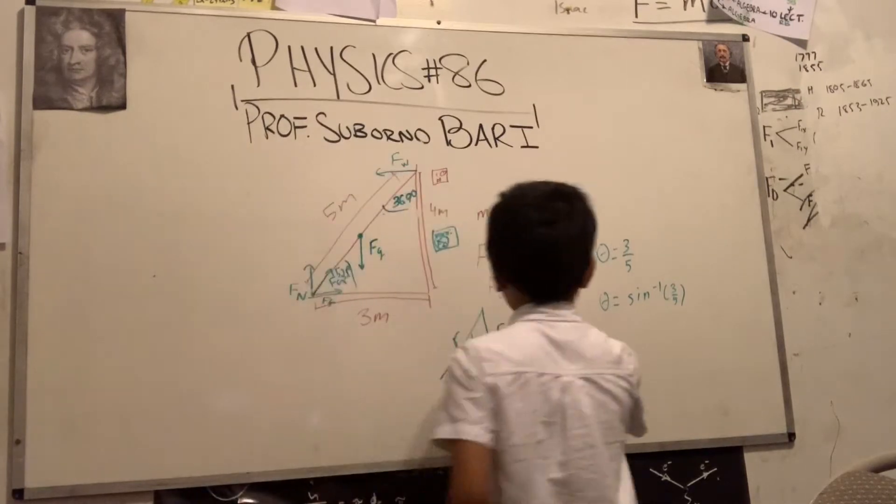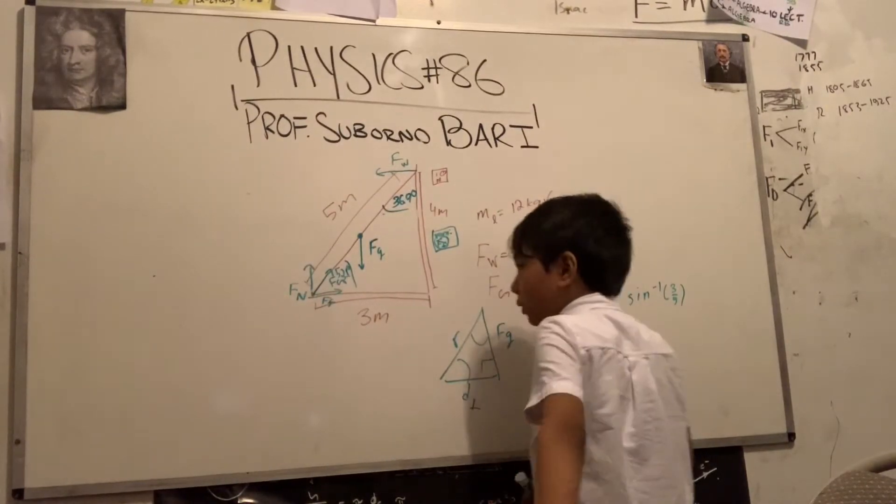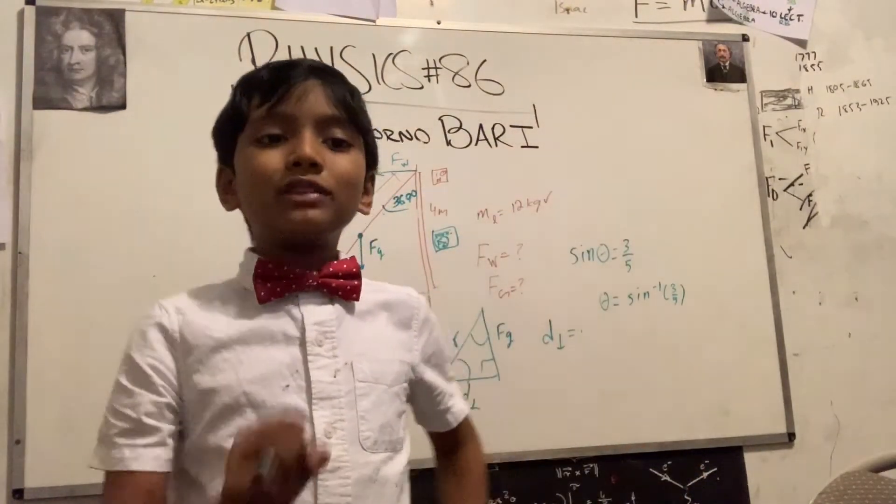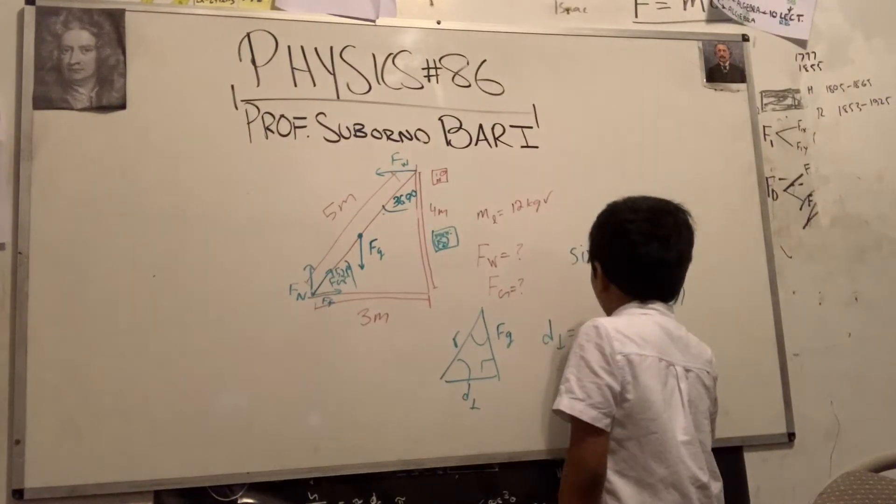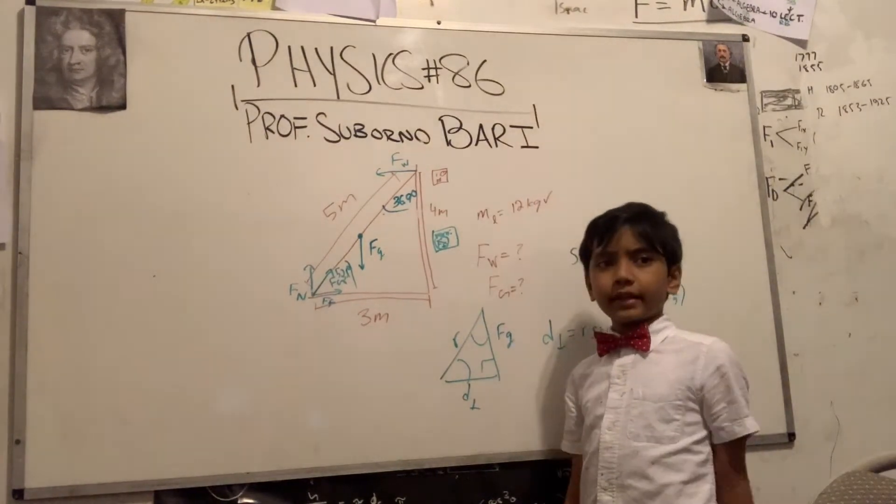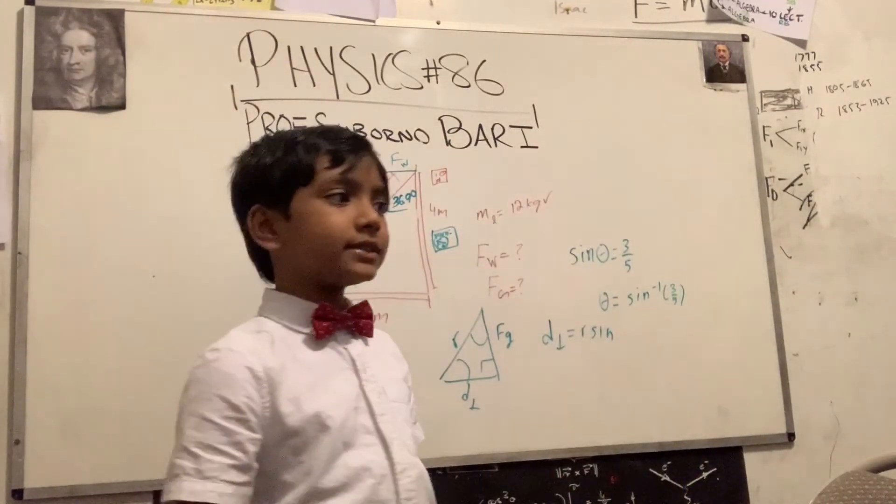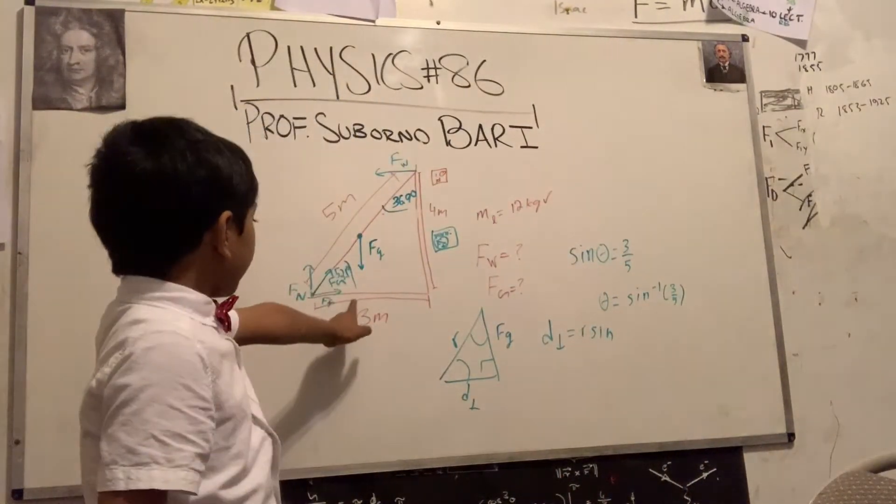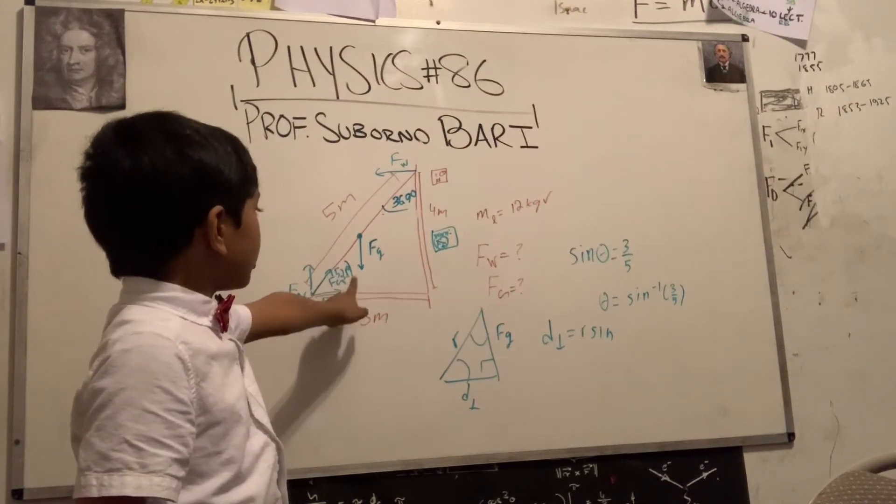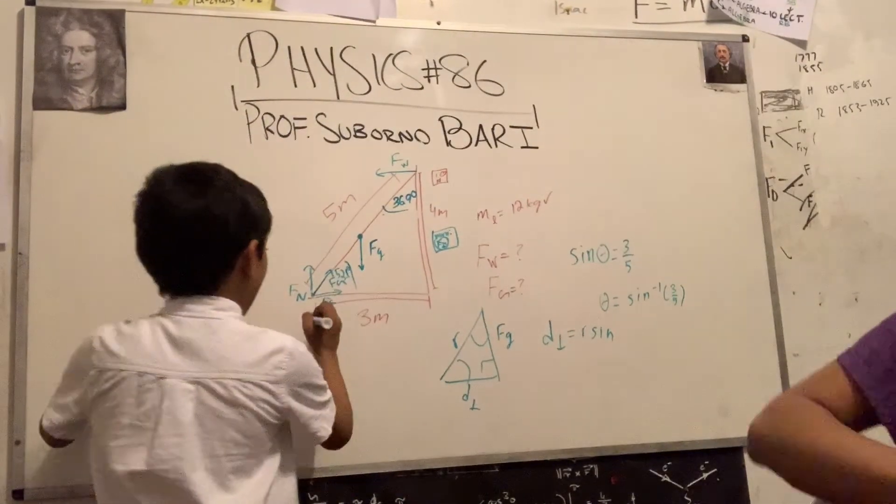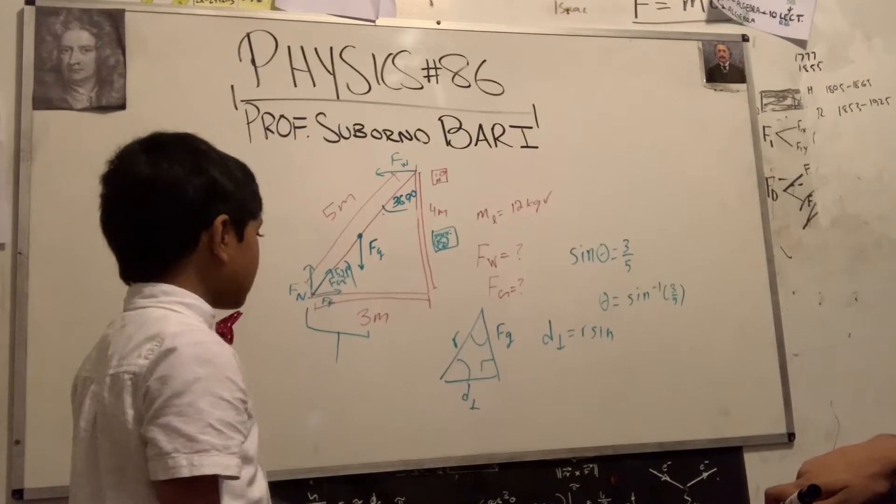Now all we need to find is d perp, and then we'll be all set. So d perp is going to be equal to... What do you mean by d perp? D perpendicular, or the distance in the horizontal direction from the ground. From the tip of the ladder to our axis. I thought this was simple, but okay.